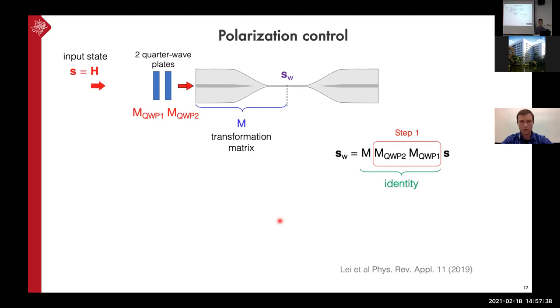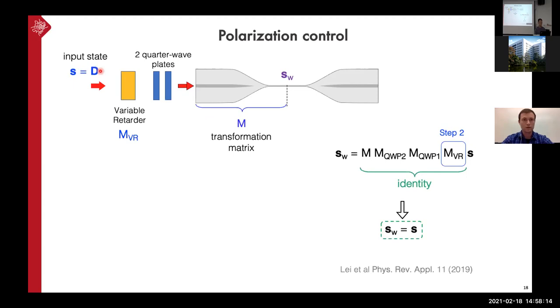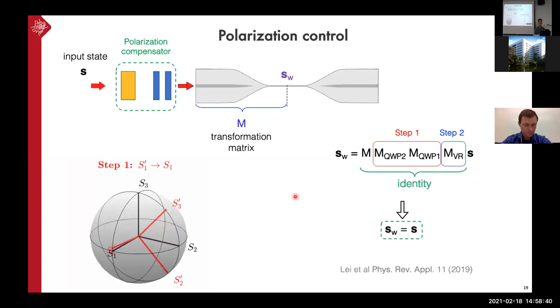And our idea is to undo this rotation, which we don't know. And we do so in two steps. So first we send a defined input state. Here it's horizontal. And then we identify it at the waist. And we adjust to quarter wave plates here, which allow us to freely rotate the polarization on the Poincaré sphere, until we get this matrix of transformation to identity. And the polarization state at the waist equals exactly to our input state. And in the second step, we send diagonal polarization. And we have a more complicated matrix, because we here introduced variable retarder. And when we adjust this retardance of the retarder, again, we get the matrix to identity. And finally, we have the polarization state at the waist equal to input polarization state. And this is true for any input state. So we achieve the complete control of the polarization.